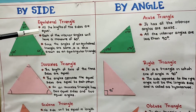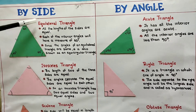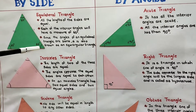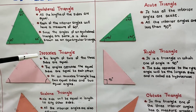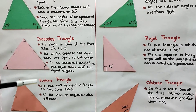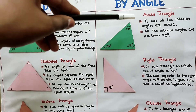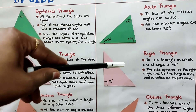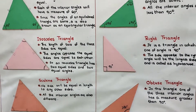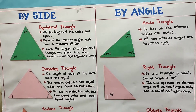Once again, if we classify triangles by side, we have equilateral triangle, isosceles triangle, and scalene triangle. And if we classify by angle, we have acute triangle, right triangle, and obtuse triangle. So these are the different types of triangles.